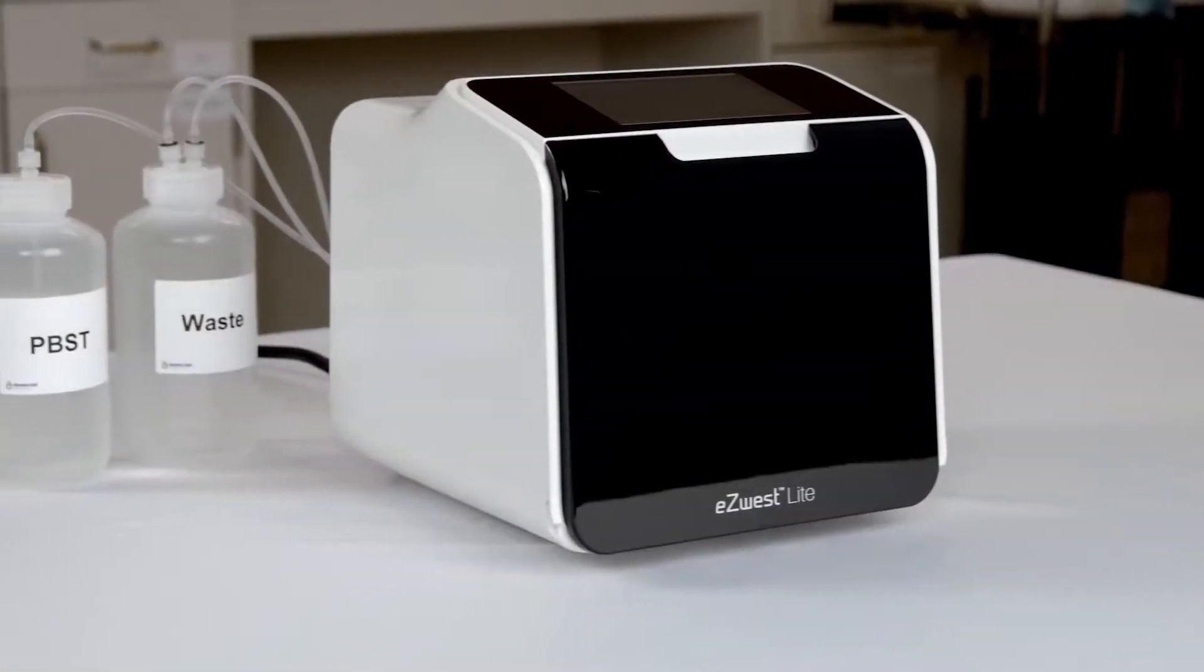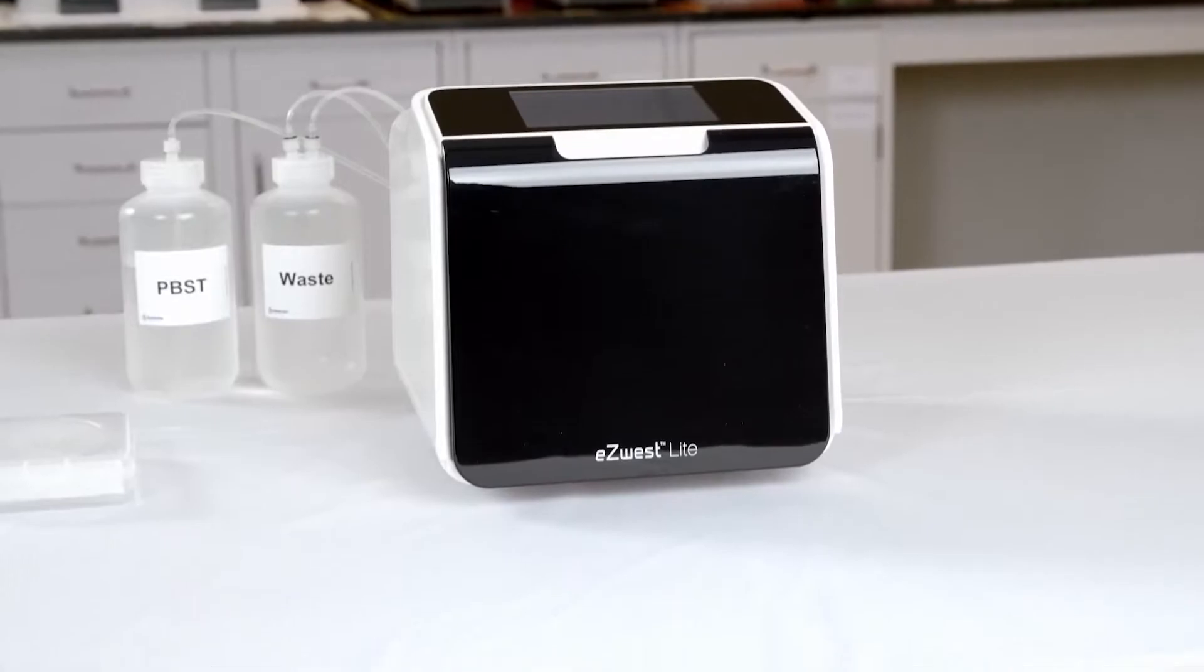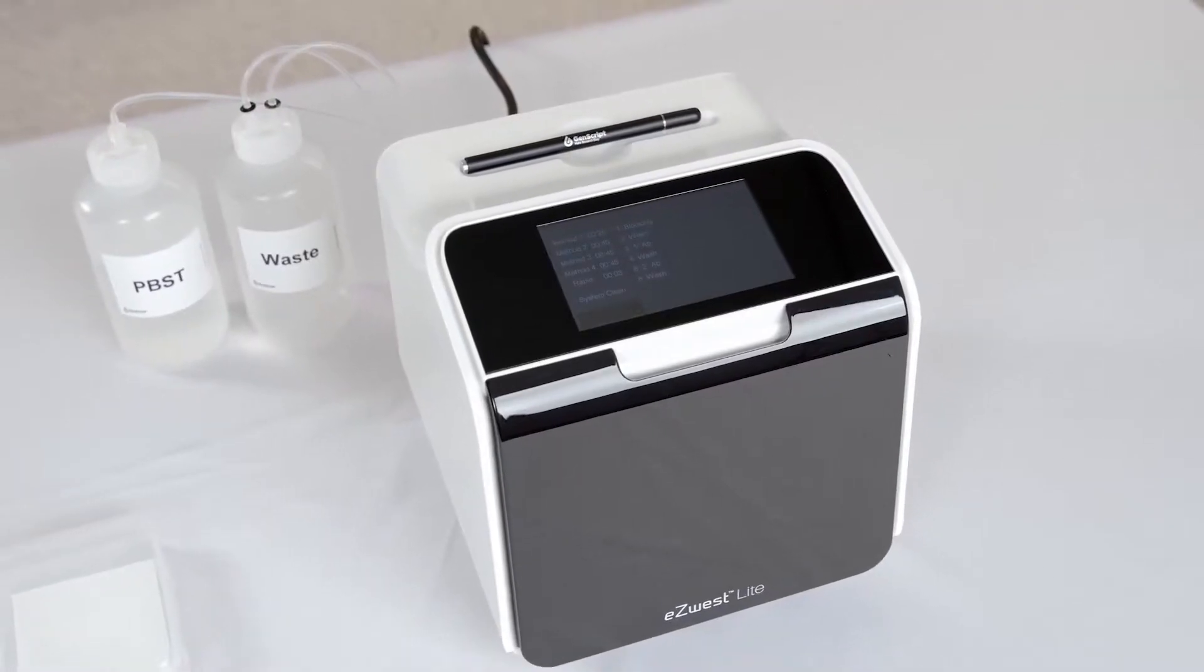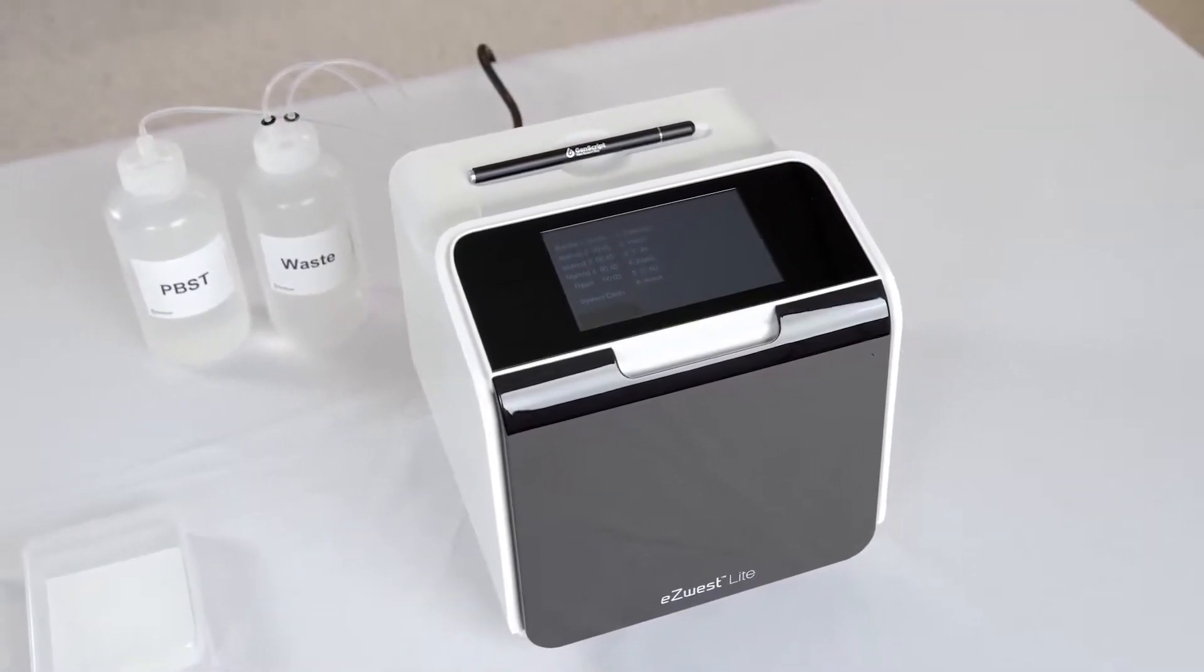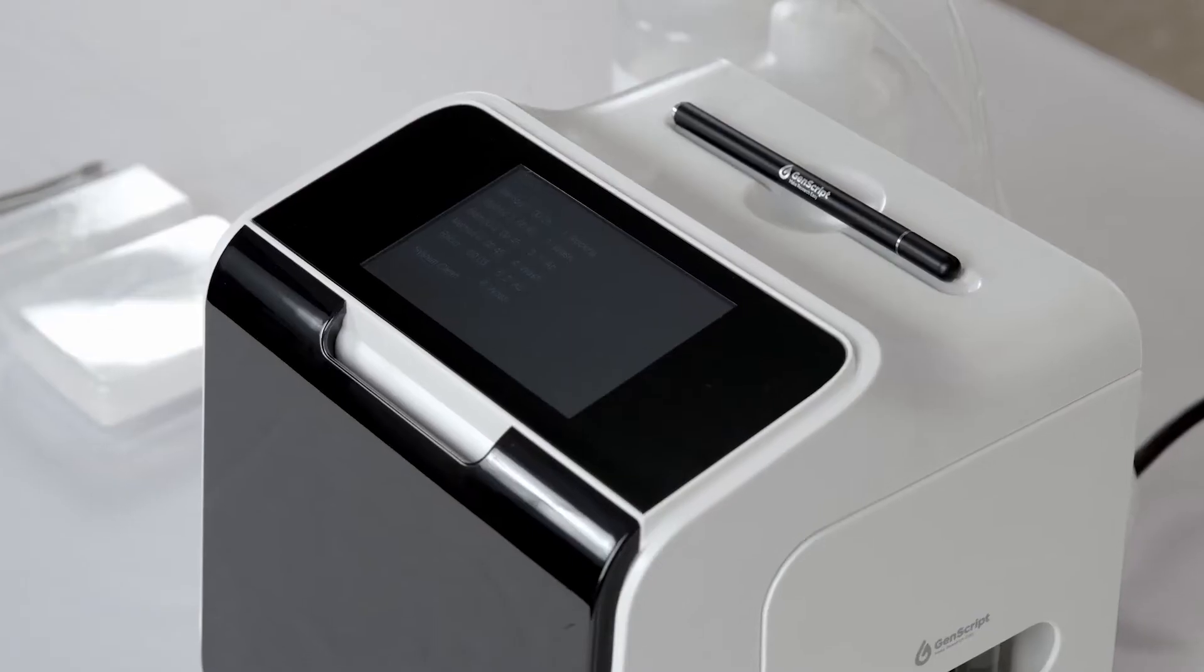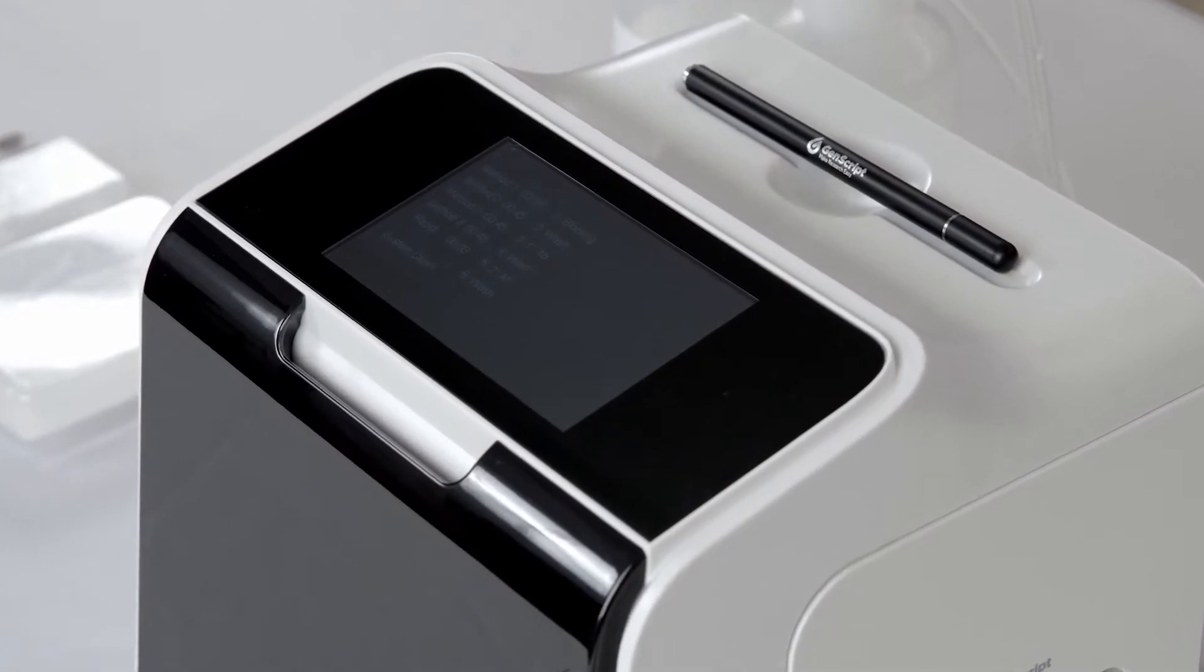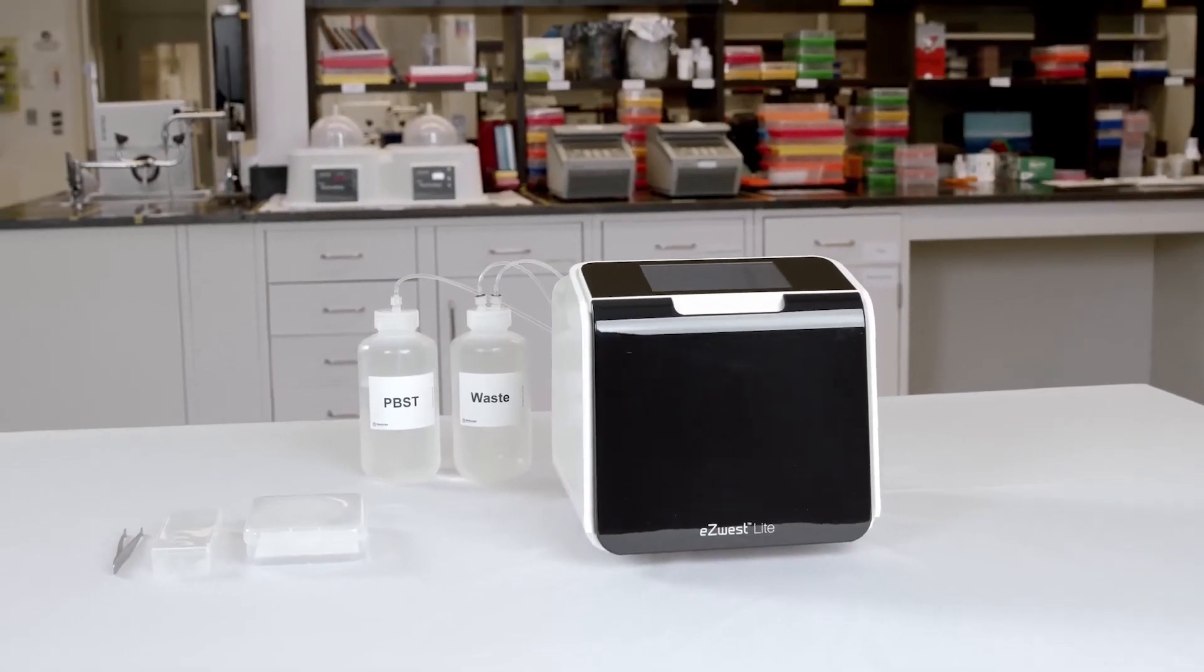eZwest Lite is a simple-to-use Western blotting device allowing researchers to free up hours of bench work. The device automatically completes the Western blotting steps, recovers antibodies, and delivers consistent results. Plan your Western days with eZwest and start saving time and money for a hassle-free solution.